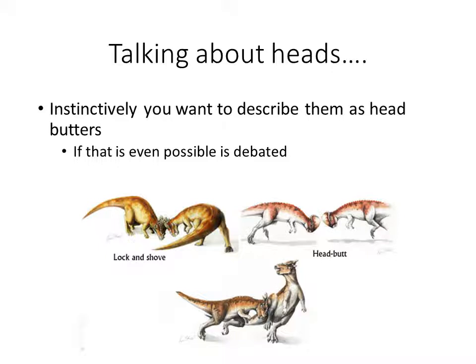We're not going to discuss the option that the dome is used against predators — modern head-butting animals don't primarily defend themselves that way. The possibility of using it as a tool — like breaking vegetation — is not thrown out, but it's hard to test. We come up with ideas, whether they seem crazy or not, and we need to go out and test them. Sometimes the hard-to-test ideas are the best supported ones, and sometimes they're not — that's how science works.